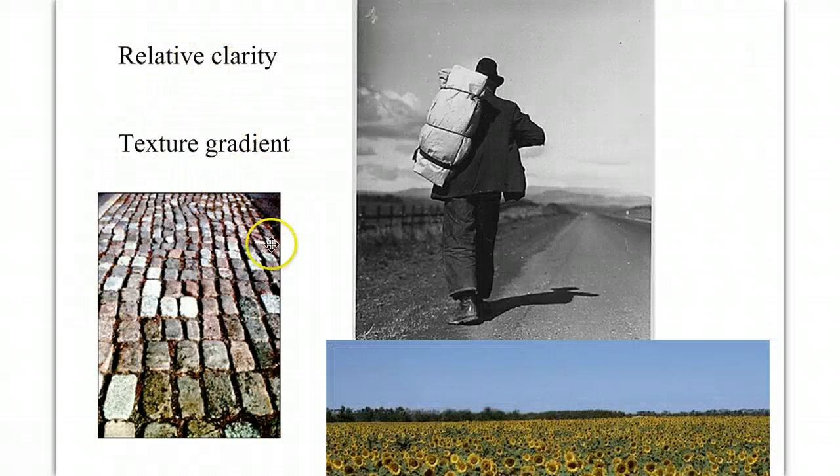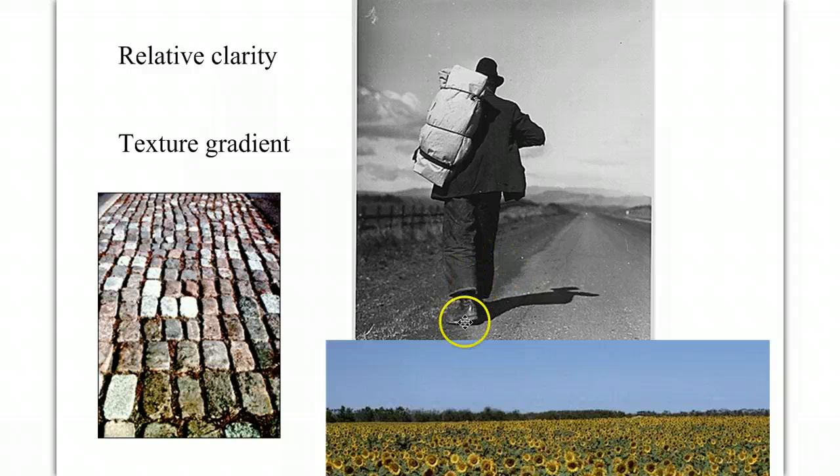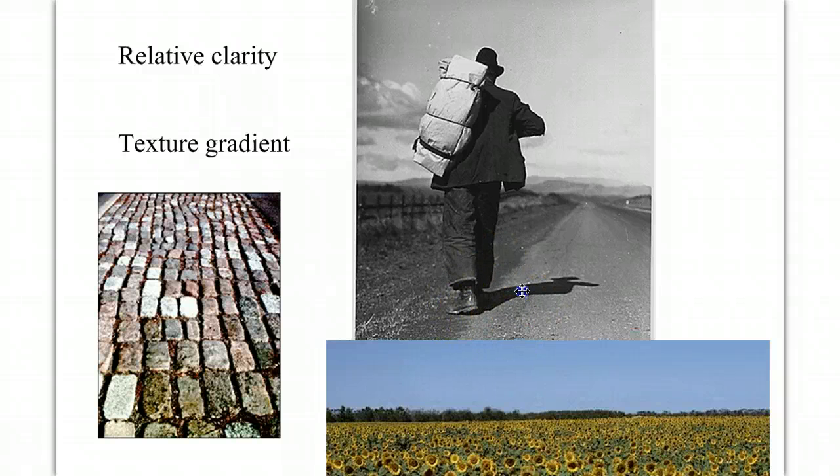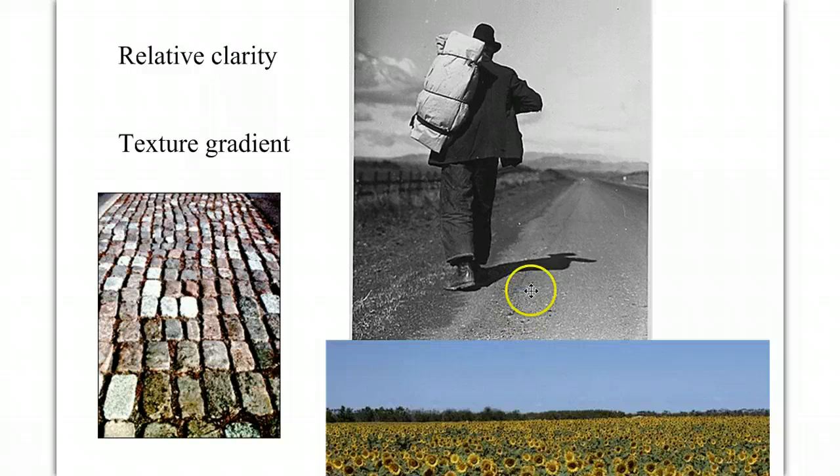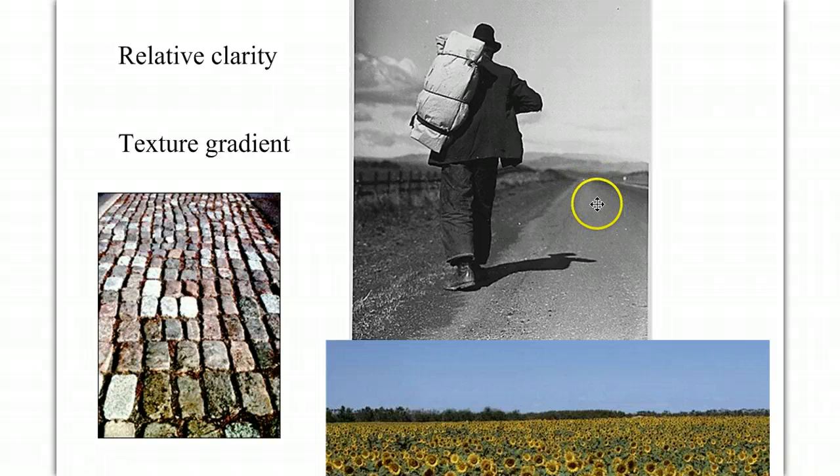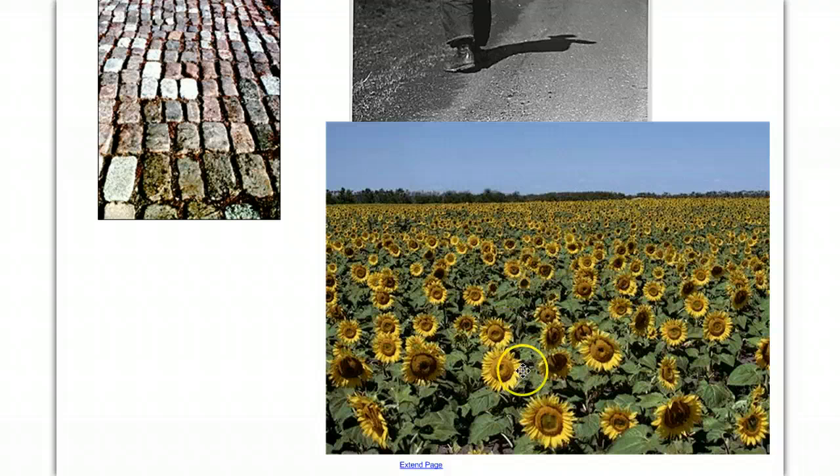Relative clarity or texture gradients. When we look at this picture, we see that down closer to us, we can see a lot more detail, texture, and as we move off into distance, we lose clarity, we lose that texture gradient, and our brain uses that as visual cues to distance. You can see the same thing in these pictures.